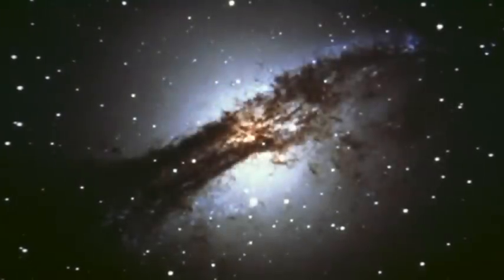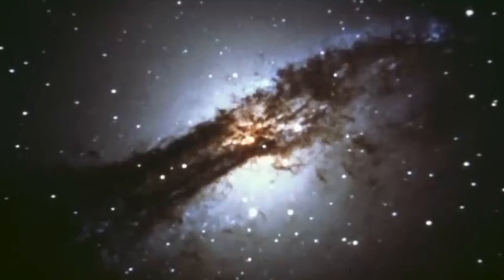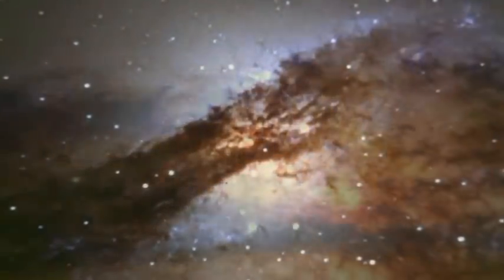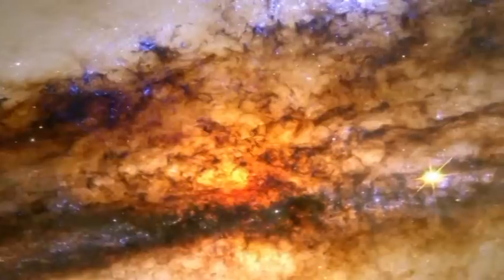This peculiar elliptical galaxy, known as Centaurus A, has a vast band of dust encircling it. This galaxy has been found to be a strong emitter of radio waves and other radiation, suggesting some form of violent activity within its nucleus.